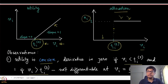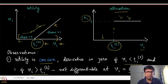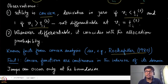Convex functions cannot have jumps within their domain. If a function has a jump inside its domain, you can find a chord joining those two points that lies below the curve at some point, violating convexity. However, this property does not hold at the endpoints — a function can be convex and still have a jump at the boundary. The key fact is that convex functions are continuous in the interior of their domain.